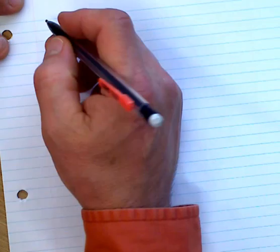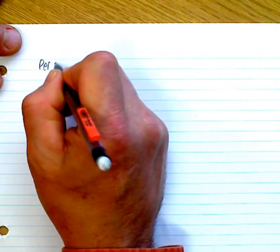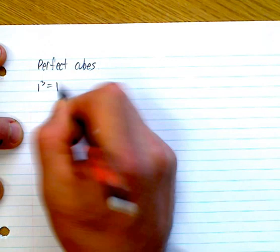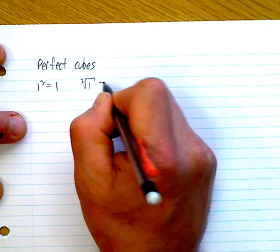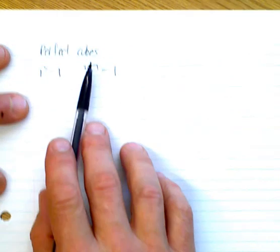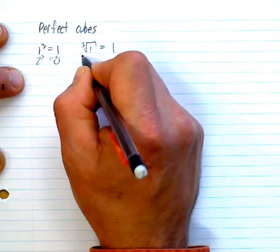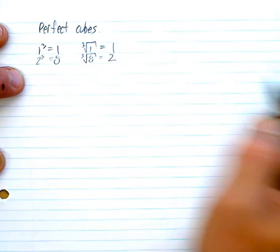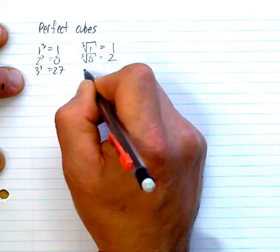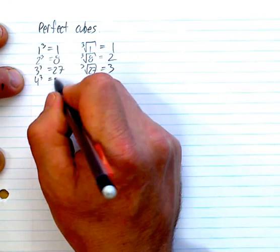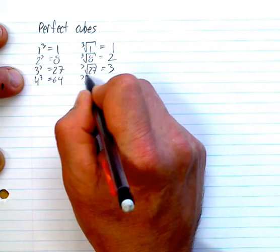These are the types of questions you'll have. Now let's look at perfect cubes. We'll do the same thing we did before. 1 cubed is just 1, so the cube root of 1 is 1 — notice that for cube root you actually have to write the 3. 2 cubed is 8, so the cube root of 8 is 2. 3 cubed is 27, so the cube root of 27 is 3. 4 cubed is 64, so the cube root of 64 is 4.